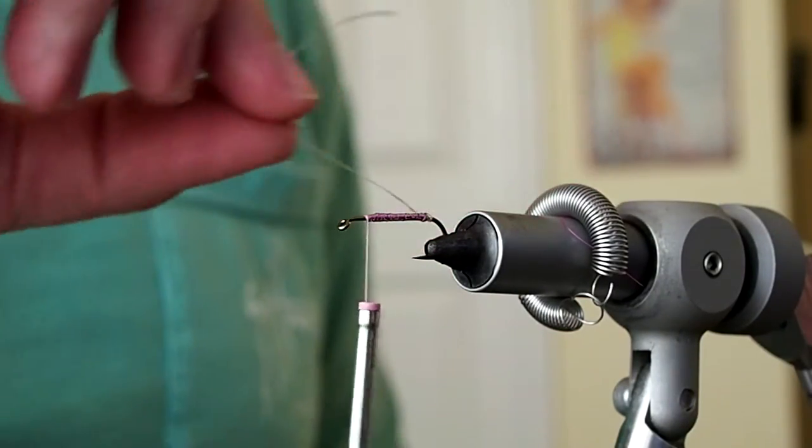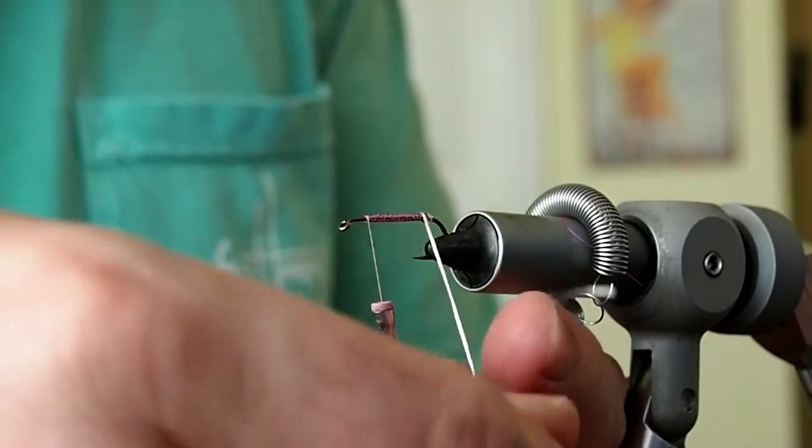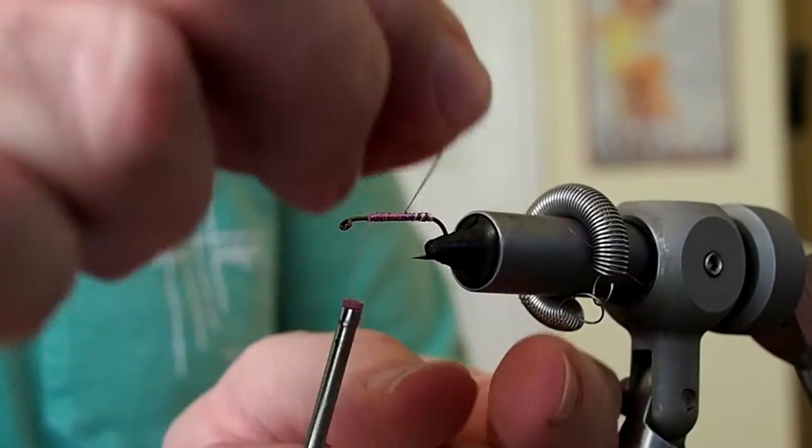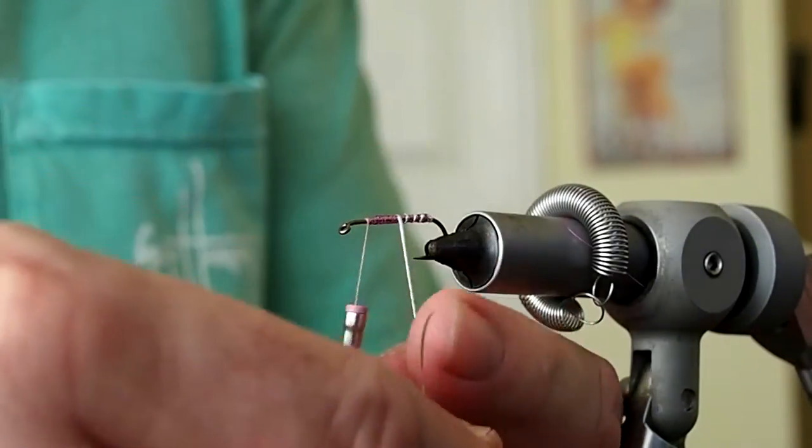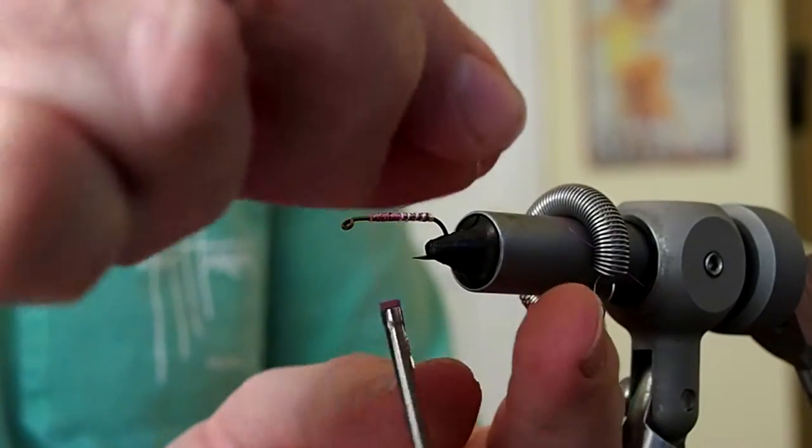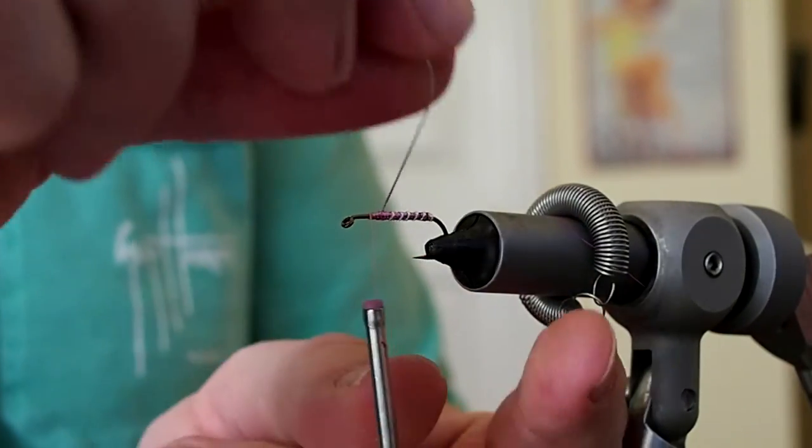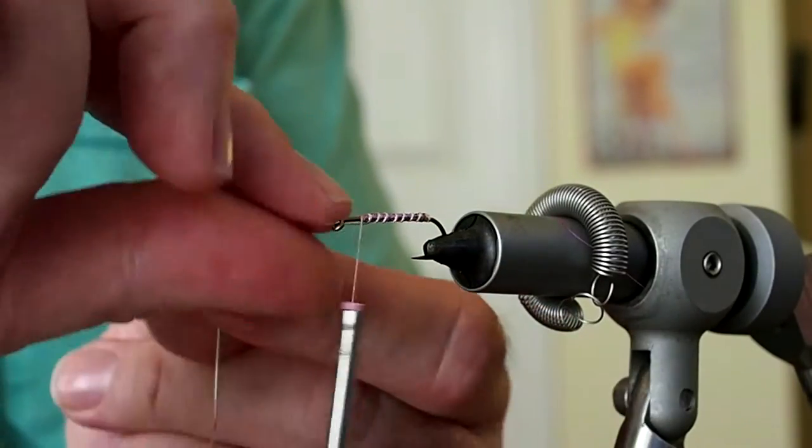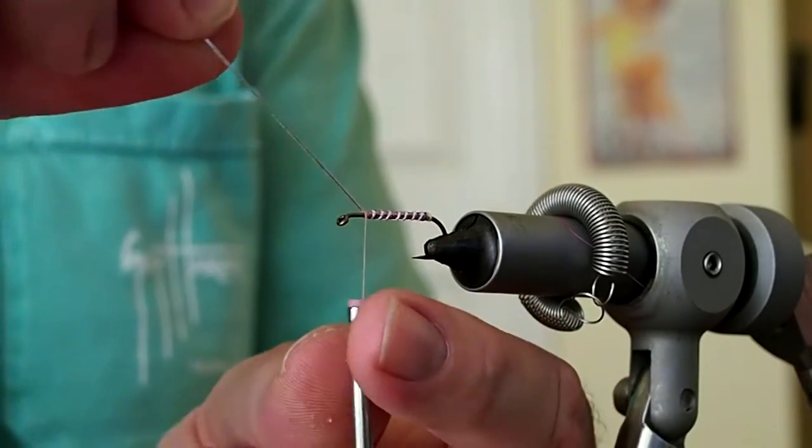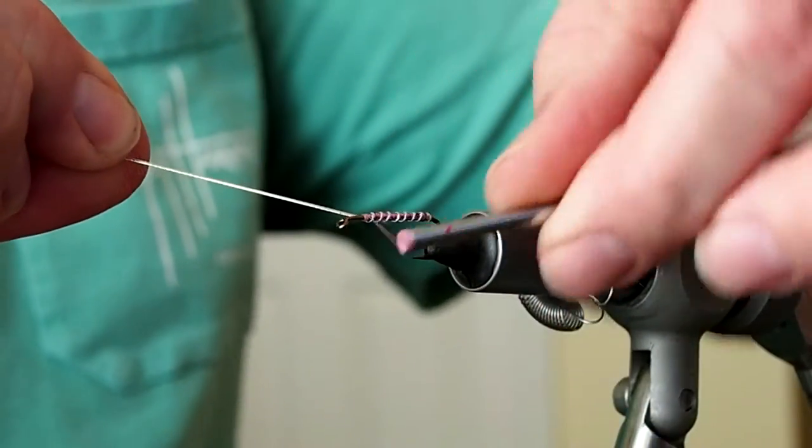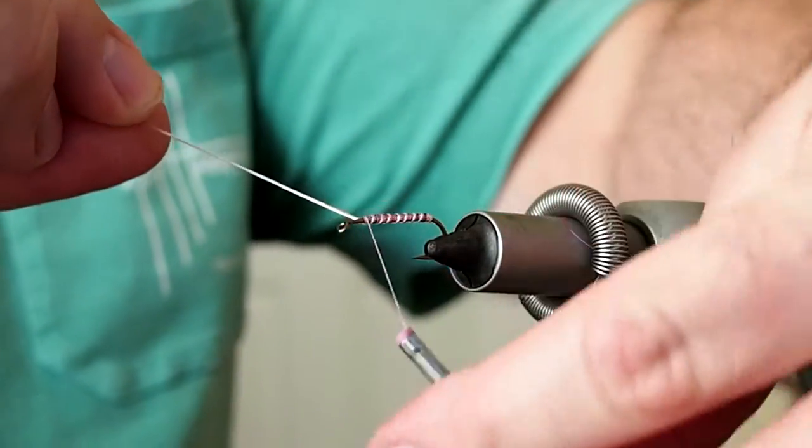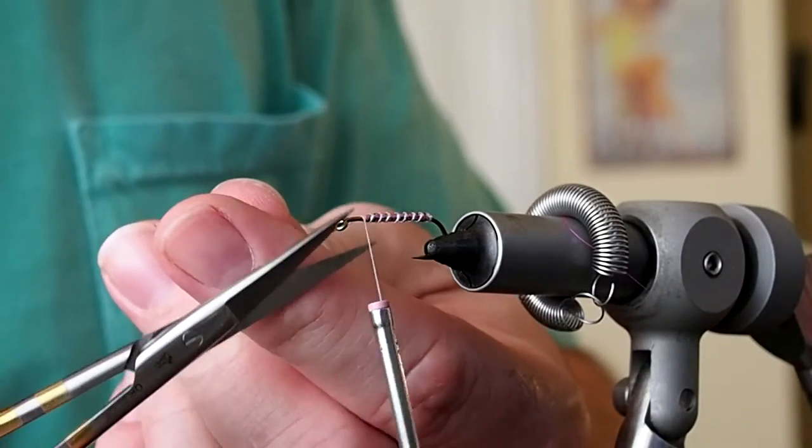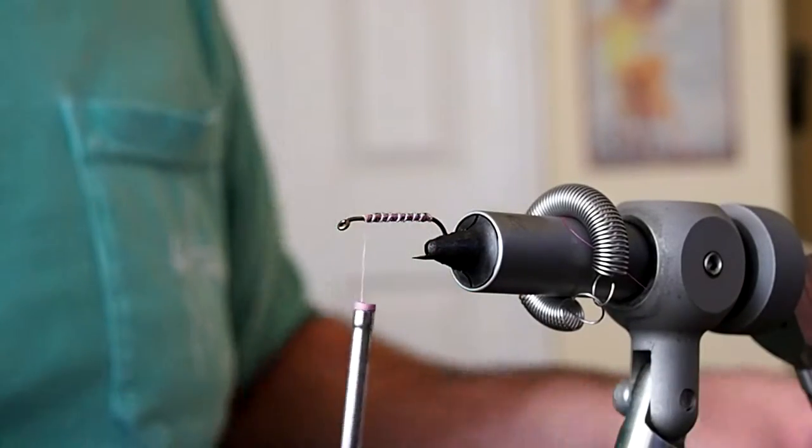And now I'm just going to take my oval tinsel here and wrap the body. And we'll capture that with our thread. There's probably enough oval tinsel there to do a second fly. Might not need quite 6 inches.